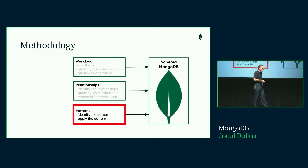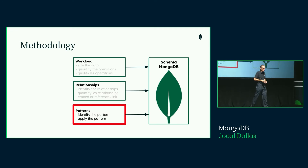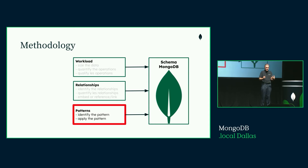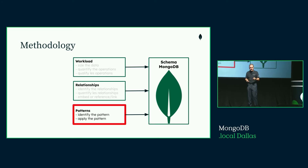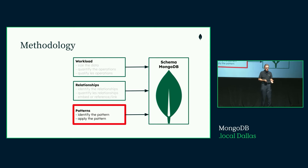Out of that second phase, we still have something that is normalized. It's not because it's in a document that it's not normalized — it's still normalized, we just decided to embed things. Now we're going to apply patterns. We'll identify situations where we can apply them and apply them. This is where we're going to get good performance and easier use in the application.